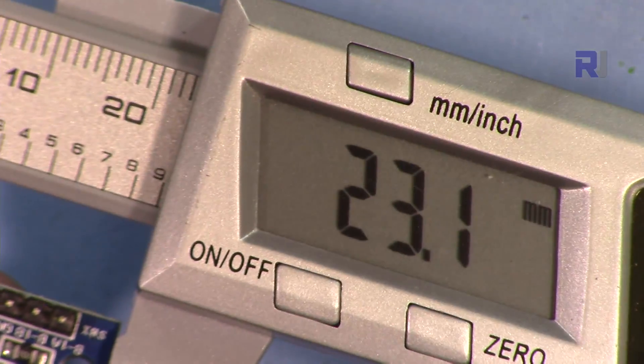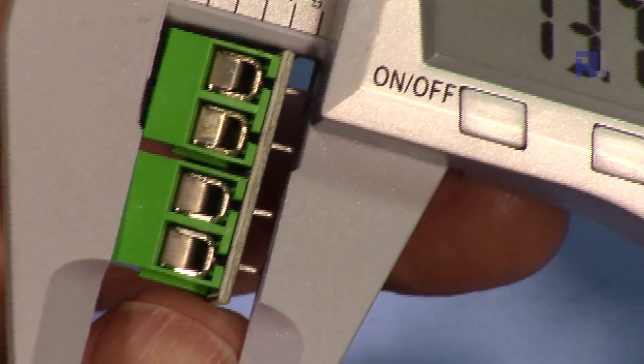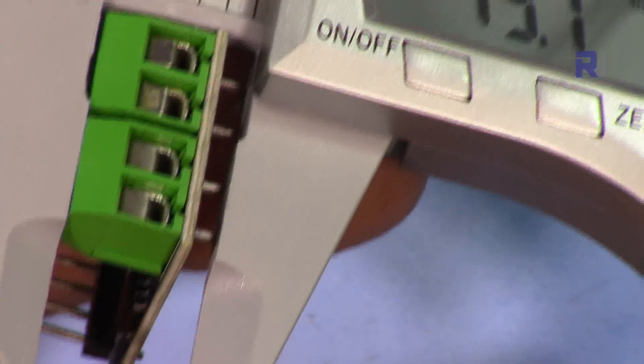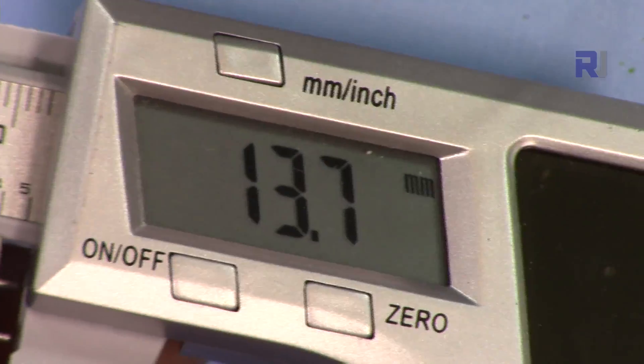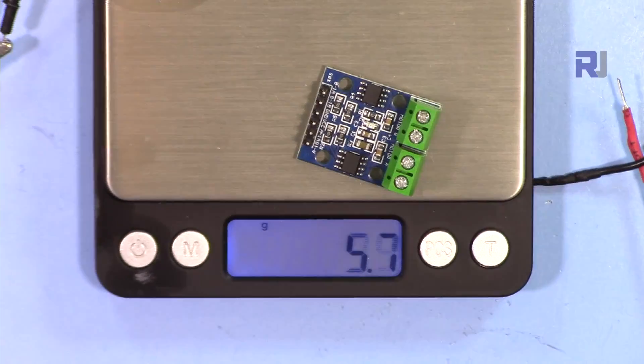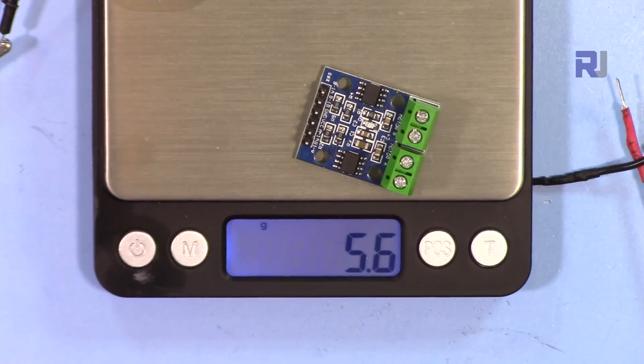The width of this module is 23.1 millimeters, the depth or height is 13.7 millimeters, and the weight is 5.6 to 7 grams.